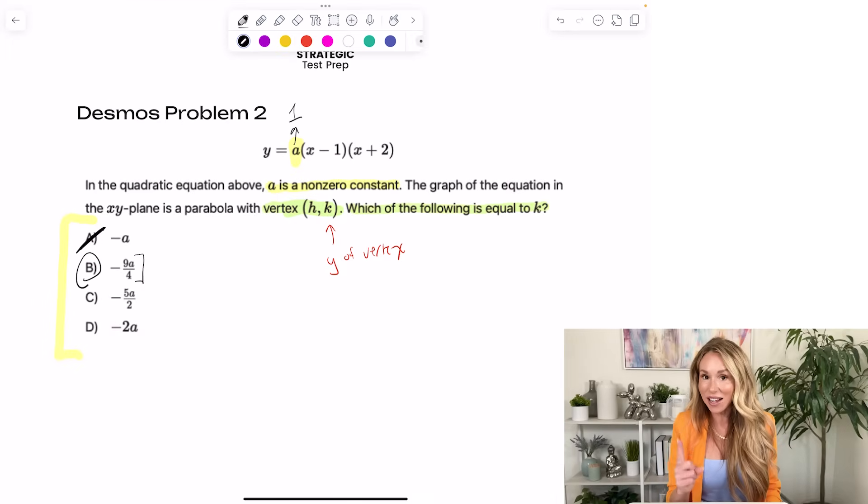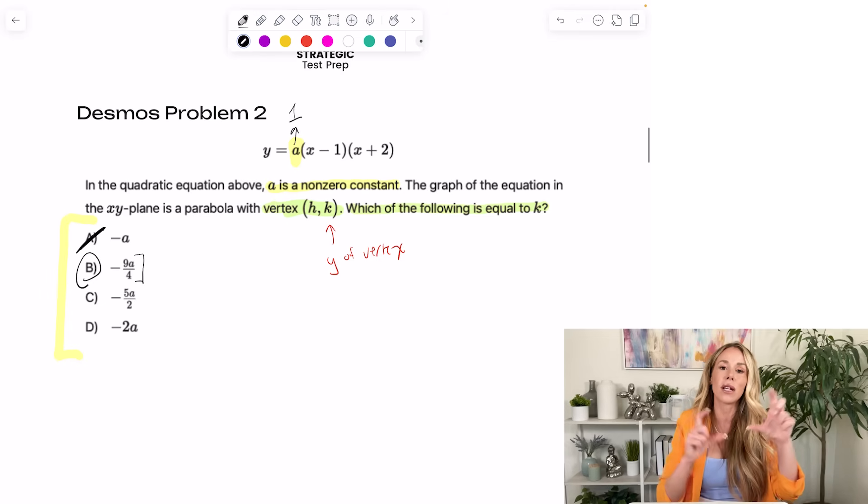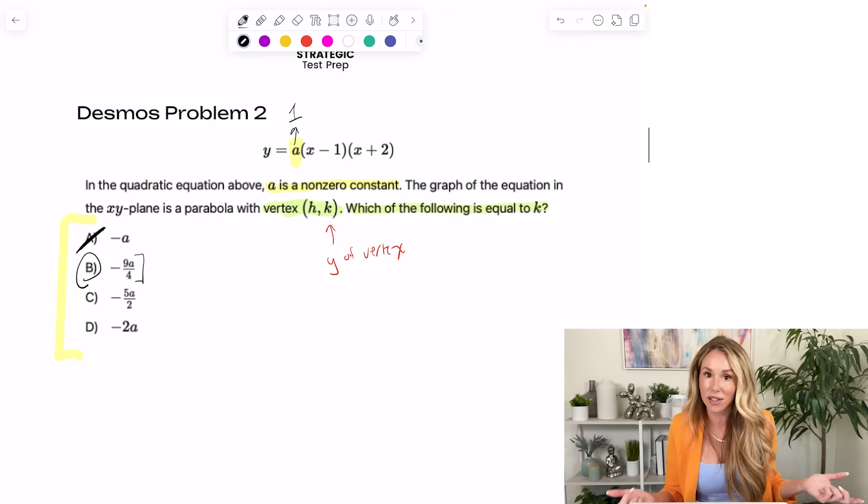So if you have one constant in the problem, Desmos is great. It's when you have multiple constants. Like if they give you an A, B, and C, that's not a good time to use Desmos because there's too many moving parts and you'll have too many sliders.